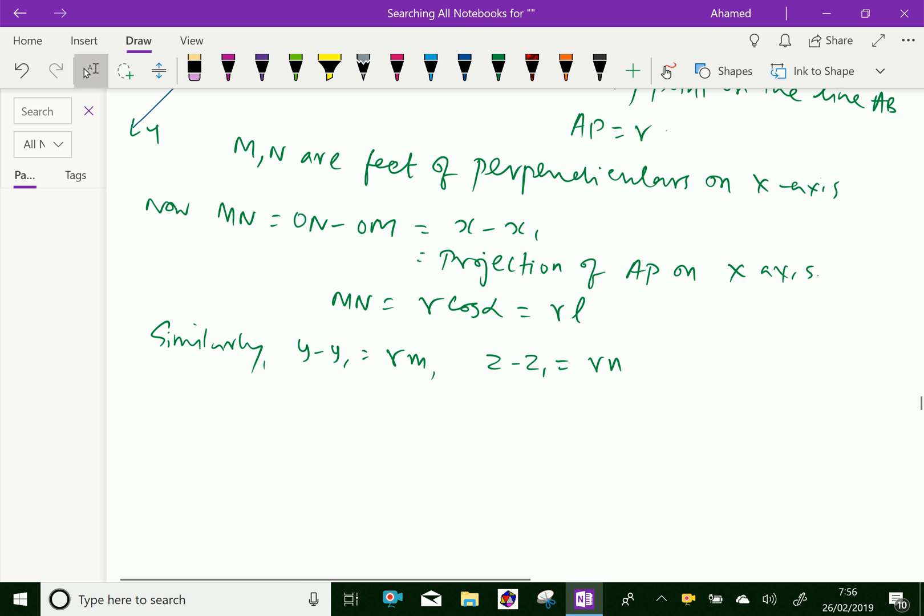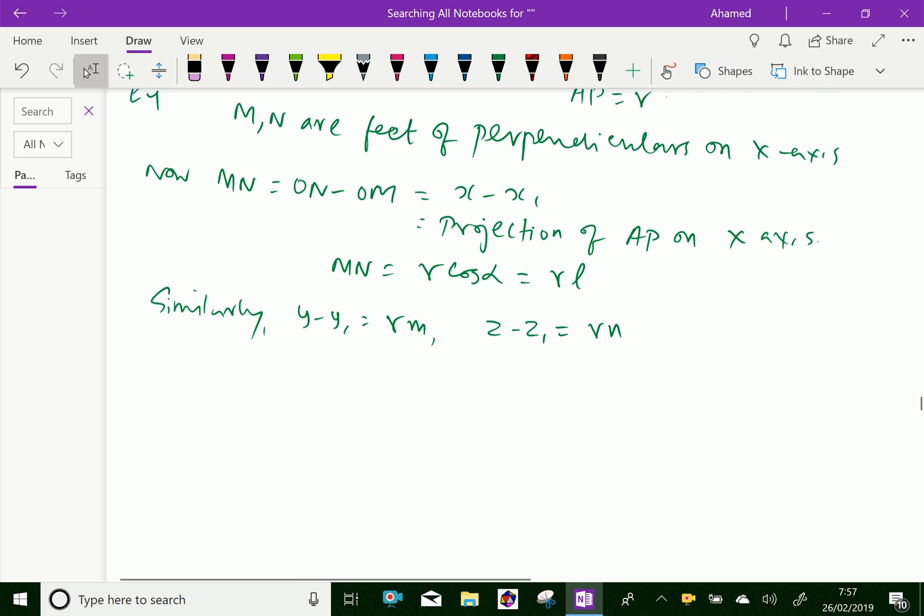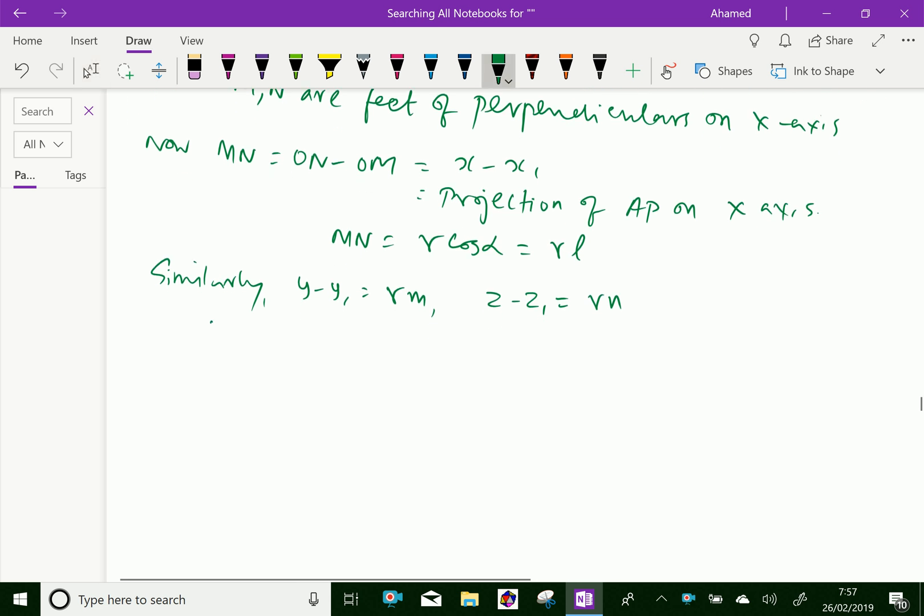Here alpha, beta, gamma are angles made by the line with the coordinate axes. Therefore, all projections are equal here. Therefore you can write R equals X minus X1 over L, same R equals Y minus Y1 by M equals Z minus Z1 by N.